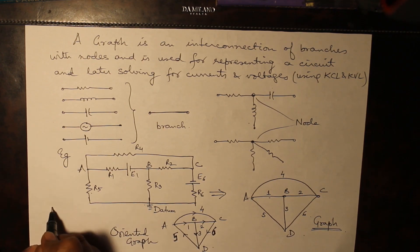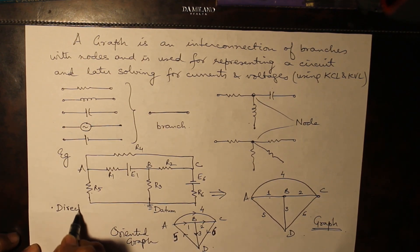That's why randomly we assume any direction and impart a direction onto a branch. But one thing you should remember - once you have imparted the direction, that direction must not be changed later on.